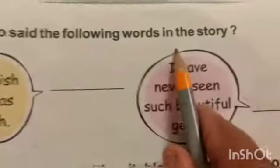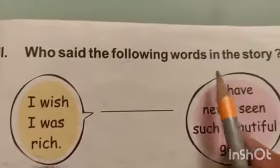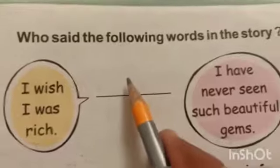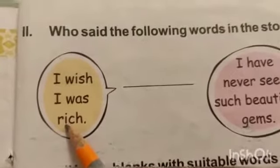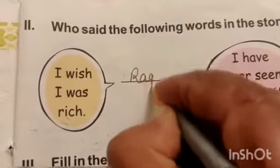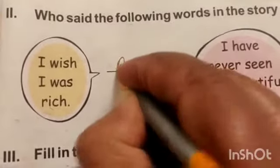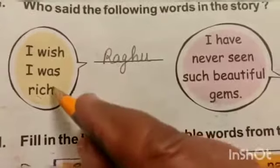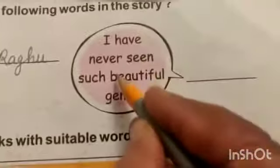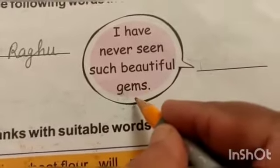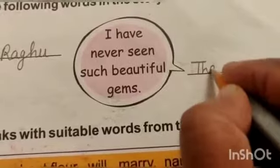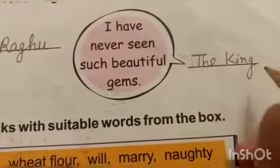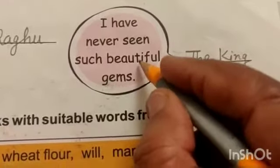Now the next question: who said the following words in the story? We have done this so many times, so you will write the names of who said the following words. Number one: 'I wish I was rich.' Who said these words? Raghu. R-A-G-H-U. Raghu said these words. Next: 'I have never seen such beautiful gems.' Who said that? The king. The king said these words.